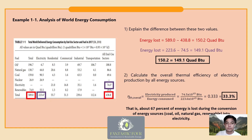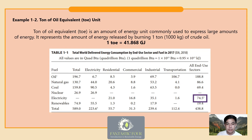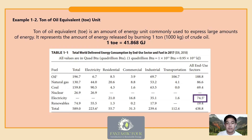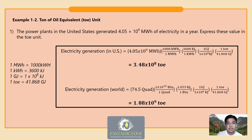Sample number two is about the ton of oil equivalent (TOE) unit. TOE is an energy unit commonly used to express large amounts of energy — it represents the amount of energy released by burning one ton, or 1,000 kilograms, of crude oil. One TOE is equal to 41.868 gigajoules. According to the data, 74.5 quad BTU of electricity is produced. Problem: power plants in the United States generated 4.05 × 10⁹ megawatt-hours of electricity in a year — express this in TOE units.